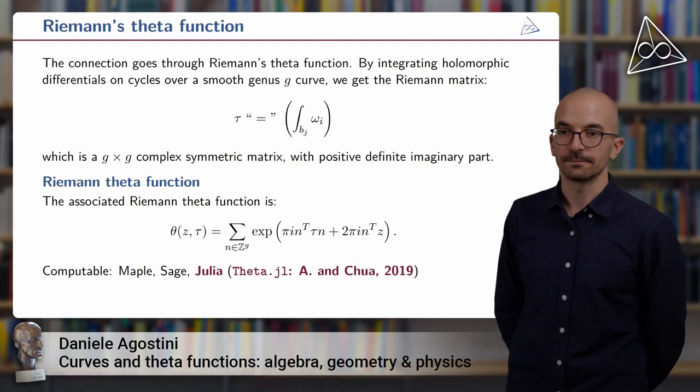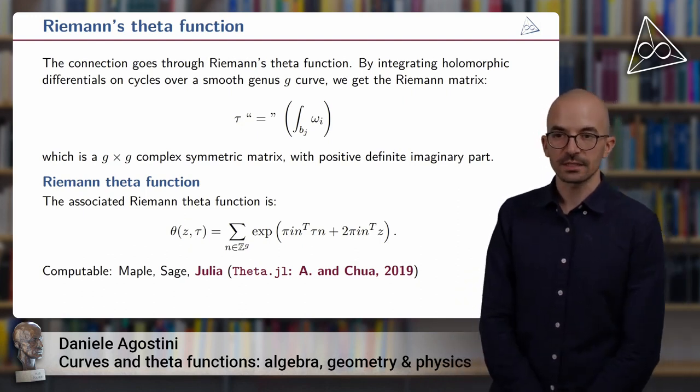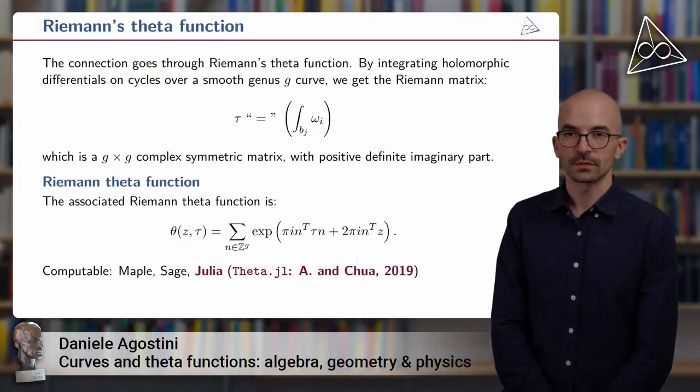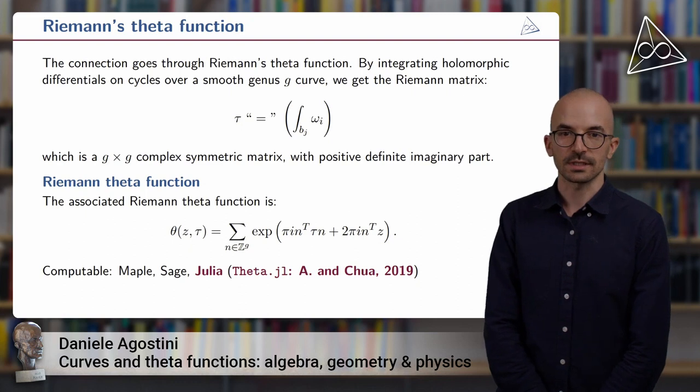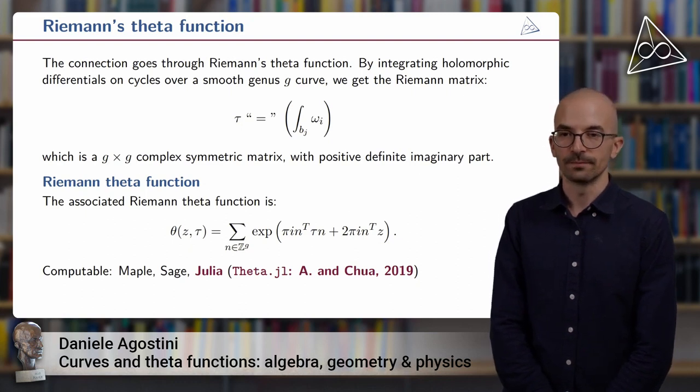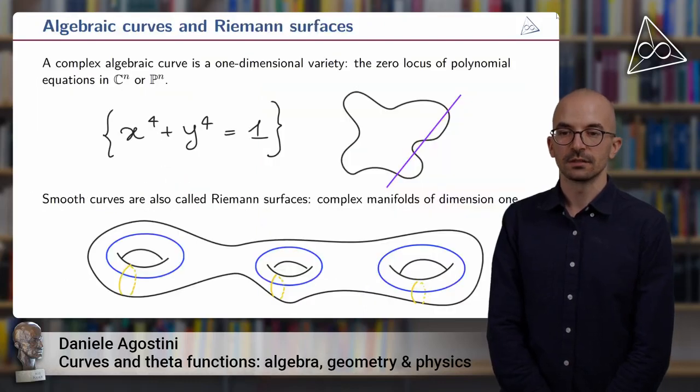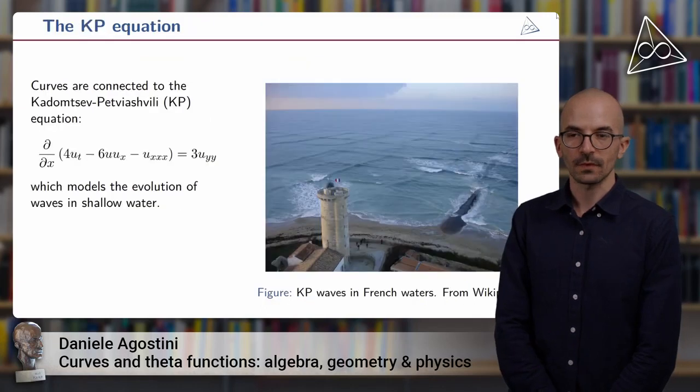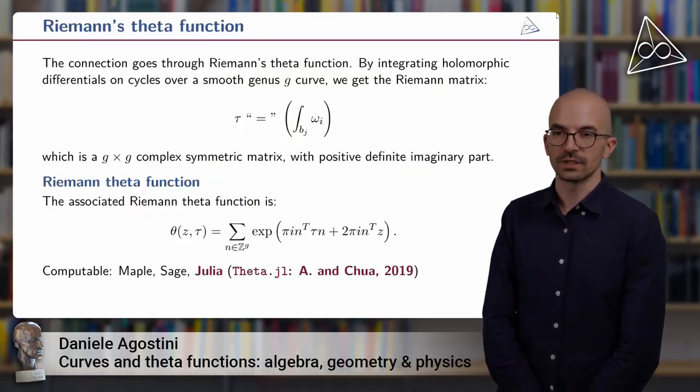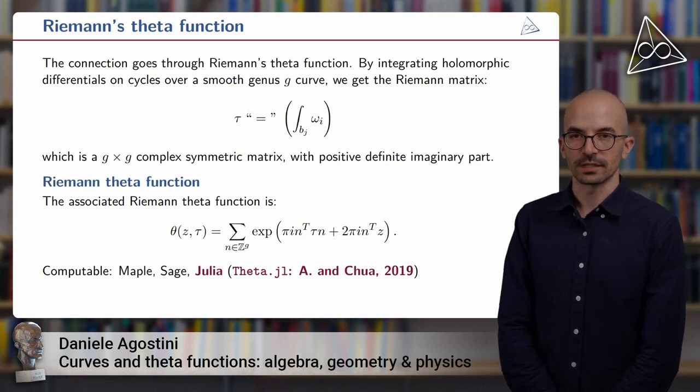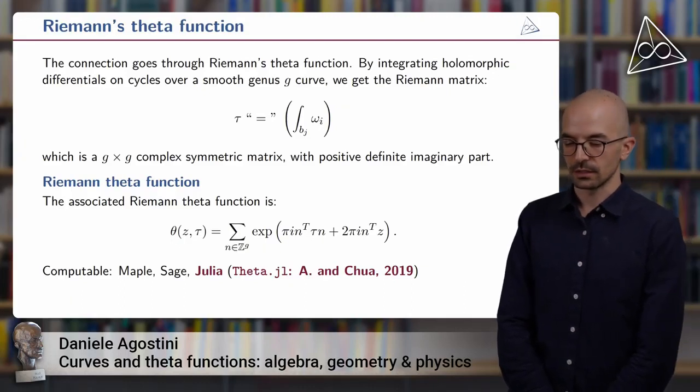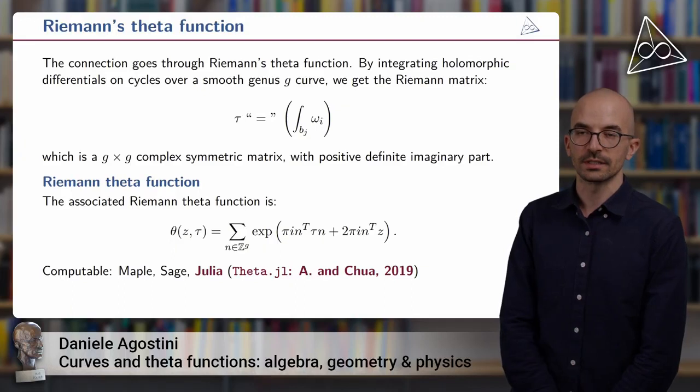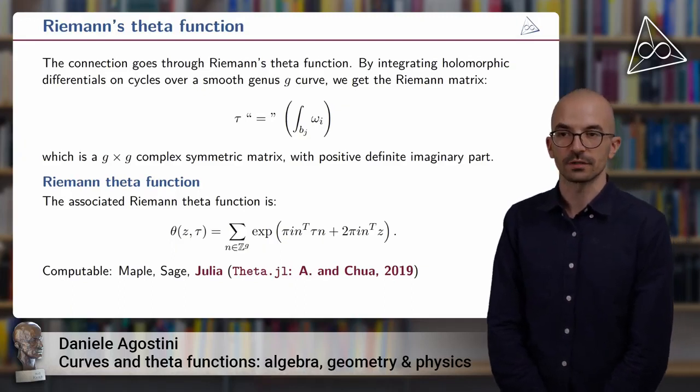Well, if the curve has genus g, we have a basis of g holomorphic differentials on the curve, omega_1 up to omega_g, and then we can integrate these basis along a special set of cycles, again b_1 to b_g. For example, you can think of these cycles as the blue cycles depicted here. So I put the quotation marks because this is not maybe the 100% correct definition, but it's good enough for the spirit of our talk. The thing to remember is that the Riemann matrix remembers the information about integrating differential forms on our Riemann surface.